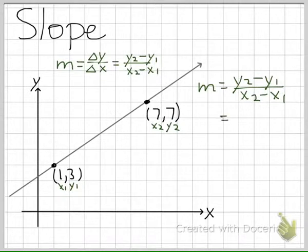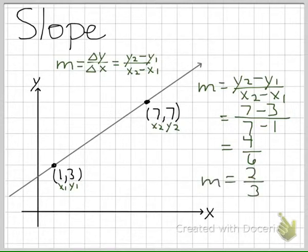We're going to substitute in our values. We get 7 minus 3 for y₂ minus y₁, and we get 7 minus 1 for x₂ minus x₁. This gives us 4 over 6, which becomes 2/3. So our slope of that line is 2/3.